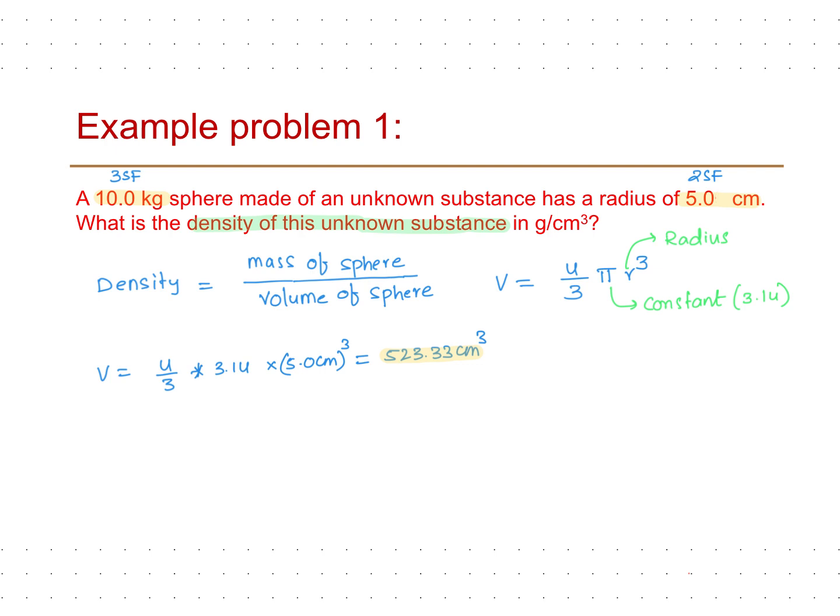Let us now look at the significant figures. Since pi is a constant, it has an infinite number of significant figures. The only measurement in this calculation is the radius, which has only two significant figures. Therefore, the volume we calculated should also have only two significant figures. However, I will carry one or more extra digits into the next step and round only the final answer. To indicate this, I write 2SF next to the measurement.